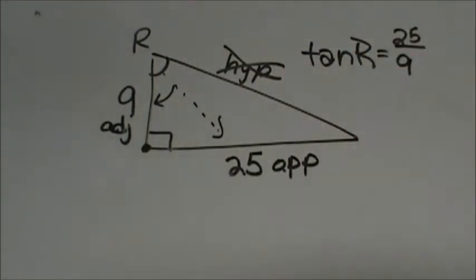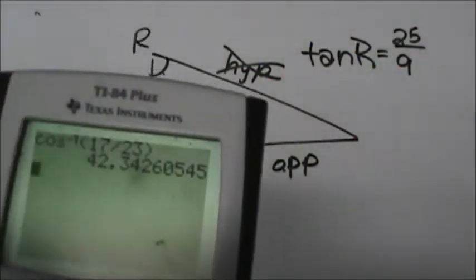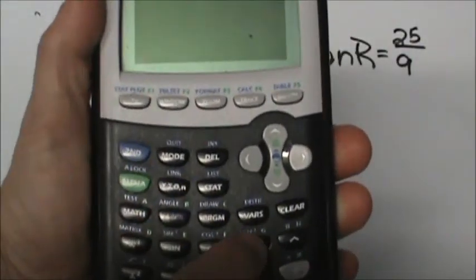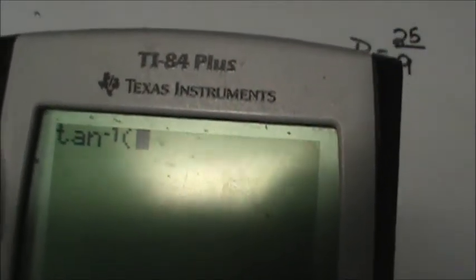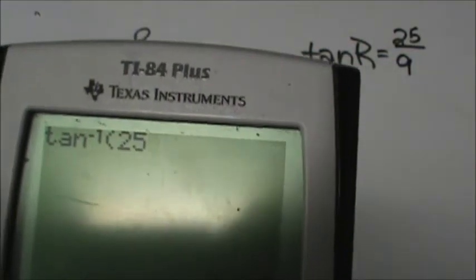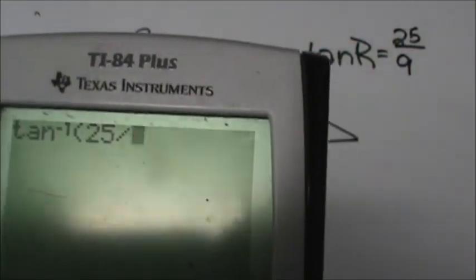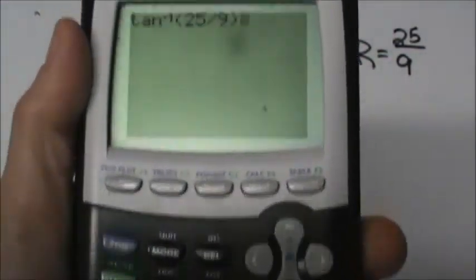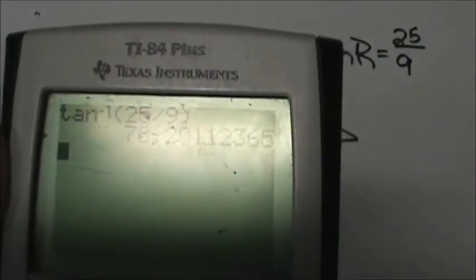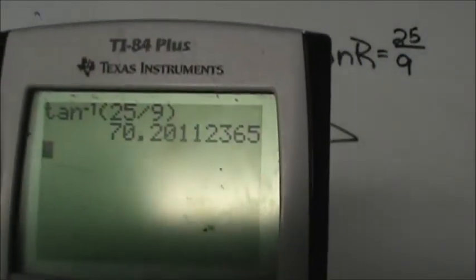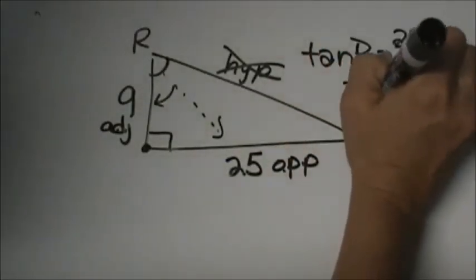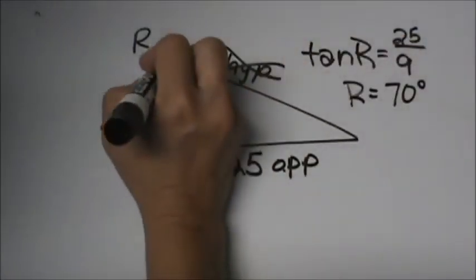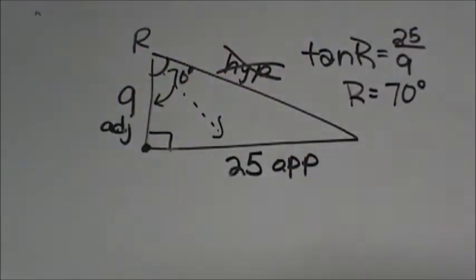And now we're going to use our inverse trig. So grab your calculators and take second tangent. You should get tangent to the negative 1 and this one is 25 divided by 9 and let's see what we get as our angle measure 70.2 so it's 70 degrees so angle R is 70 degrees. Okay so that's how you figure that out.